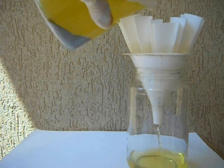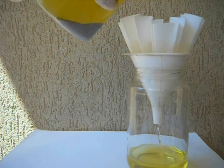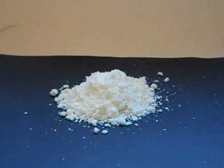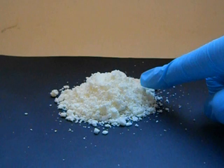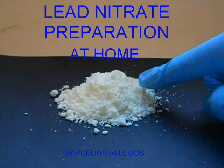Now it should be white, but it is light yellow. Probably because in my lab was present a small quantity of iron. However, our lead nitrate is still good for home lab chemistry. Thanks for watching. See you soon.